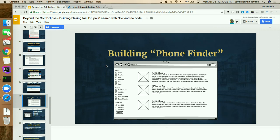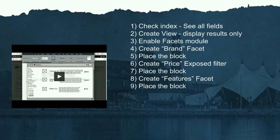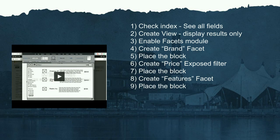JK takes over. Time is limited, so I'll show the videos quickly. Here is the wireframe we're planning to build — it's a search filter with brand, features, and prices on the left. I'll try to implement this. Here's the list of items we need to do to accomplish the facet part: first we'll check the index to make sure we've added all the fields required for showing in the search results page — both for the search filter and the right side section with image, title, description, and price. Then we'll create a view, enable the facets module, and create a brand facet. The same way you create the brand facet, you'll do the same for the price exposed filter and features facet.